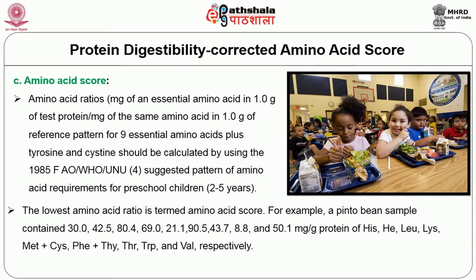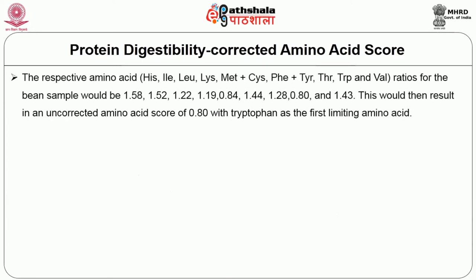For example, a pinto bean sample contained 30, 42.5, 80.4, 69, 21.1, 90.5, 43.7, 8.8, and 51.1 milligrams per gram of protein for histidine and the other amino acids. The respective amino acid ratios for the bean sample would be 1.58, 1.22, 1.19, 0.35, and various others. This results in an uncorrected amino acid score of 0.8, with tryptophan as the first limiting amino acid.